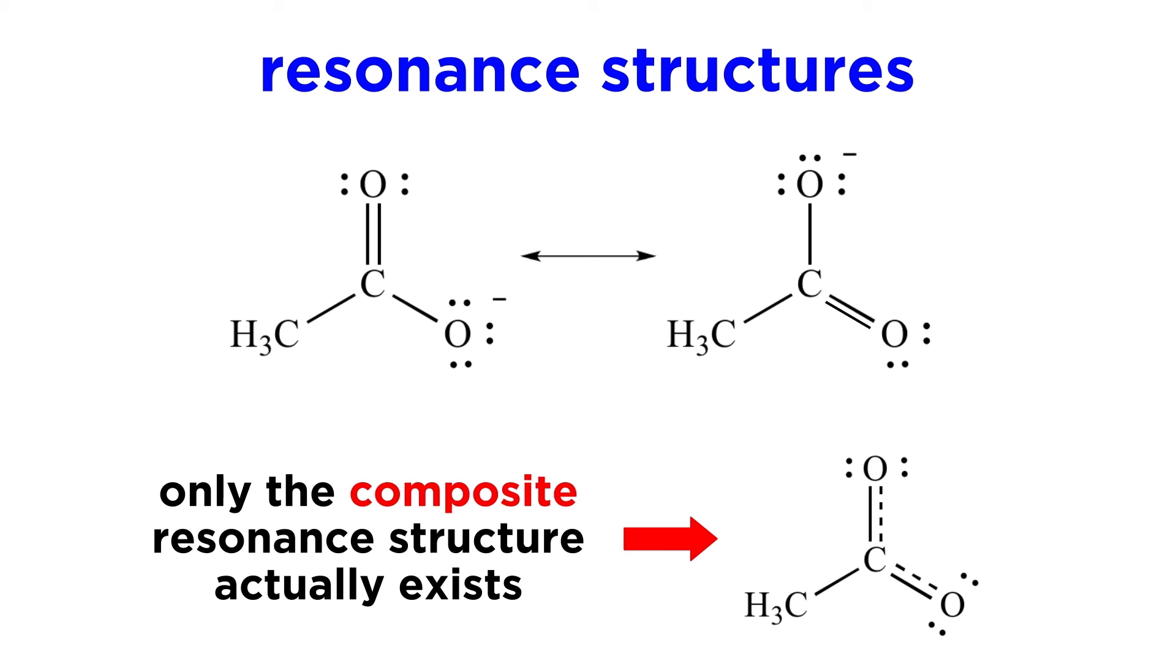This is the combination of all the valid resonance forms, which frequently results in partial pi electron density about a certain portion of the molecule.